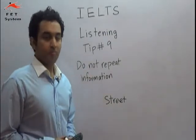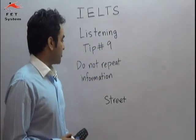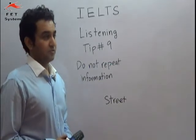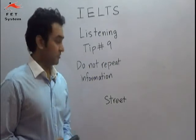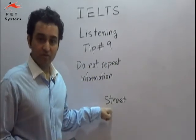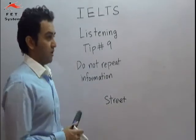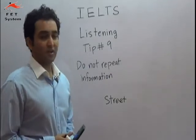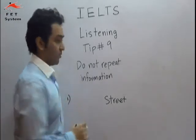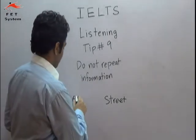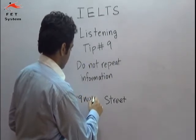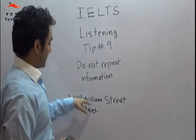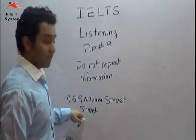Welcome to fedsystem.com. Today I'm going to teach you IELTS listening tip number 9: do not repeat information. On the question sheet, some words are already written and you have to fill in the blanks. For example, the word 'Street' is already written. If a man says he lives at 619 William Street, the answer for question number one is only '619 William' — not 'Street,' because that information is already given.